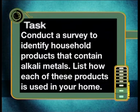So far, we have focused on the reactions of the alkali metals and the oxides of the alkali metals. But did you know that there are many useful household substances containing these elements? Let's find out more in today's task. Conduct a survey to identify household products that contain alkali metals and list how each of these products is used in your home. For this task, you would need to select 10 items found in your home that contain an alkali metal. You can determine if a product contains an alkali metal by carefully reading the ingredients listed on the product's label. By tabulating all your information, you'll be quite surprised to see how these reactive metals impact our daily lives.